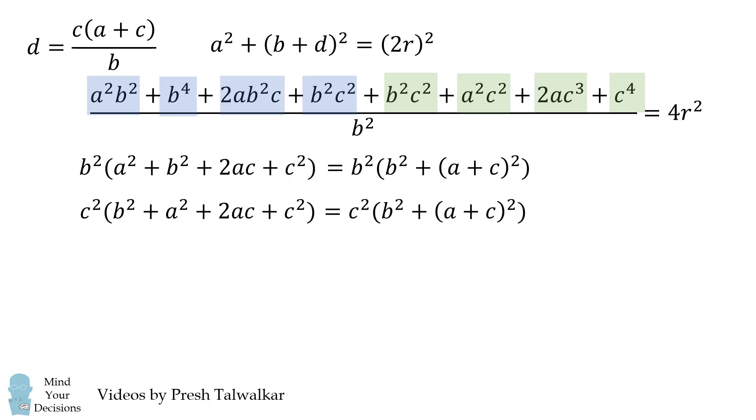Therefore, this all simplifies to be the quantity B squared plus C squared times this common factor of B squared plus the quantity A plus C squared all over B squared. And this is equal to 4R squared.